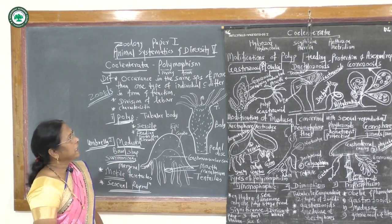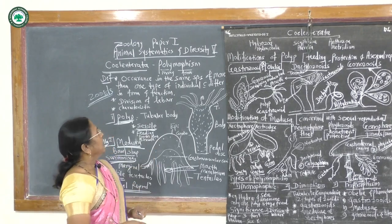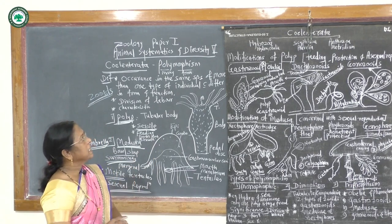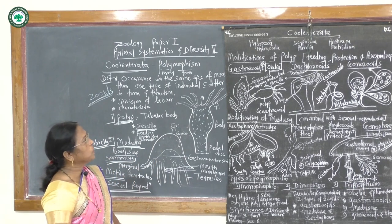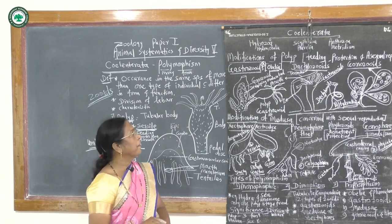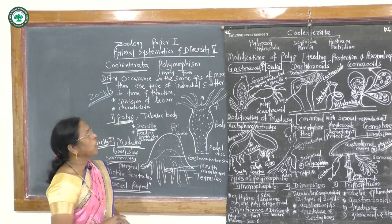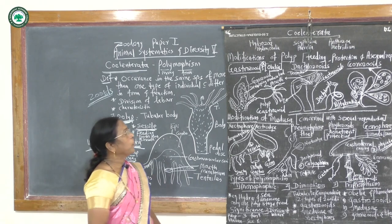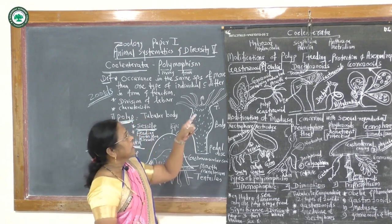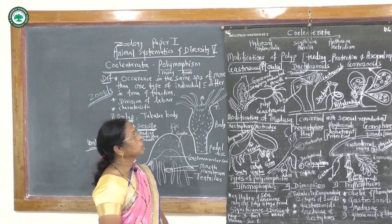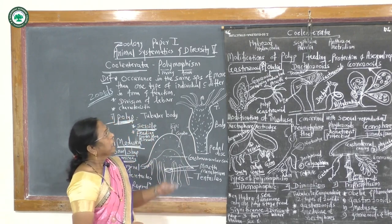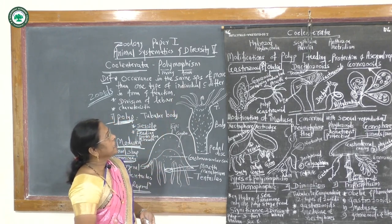Coelenterata has three classes: first Hydrozoa, second Scyphozoa, and third Anthozoa. In Hydrozoa, Hydra and Obelia have a limited type of polymorphic forms, but Scyphozoa and Anthozoa show numerous polymorphic individuals or zoids.